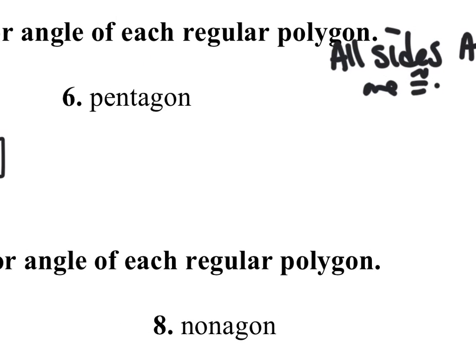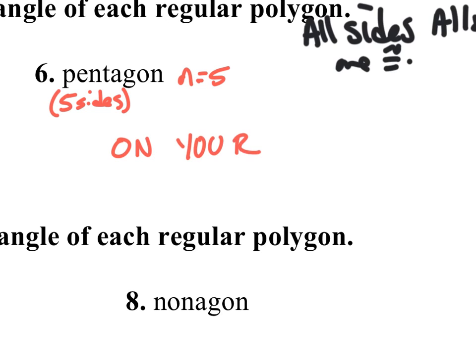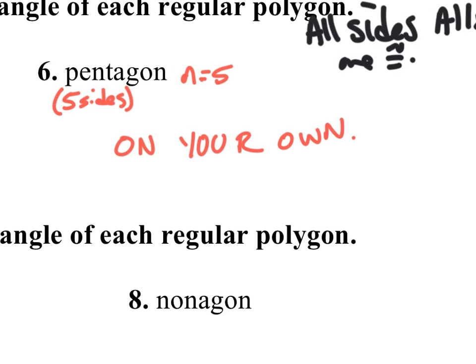Number 6 is a pentagon — a five-sided figure, so n equals 5, much like the building in Washington, D.C. called the Pentagon because it has five sides. I want you to do this one on your own following the example in number 5. Rewind if you need to, and I'll be checking it in class.